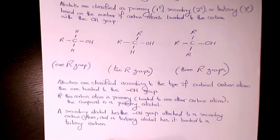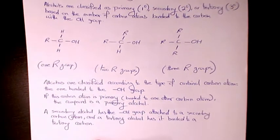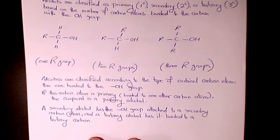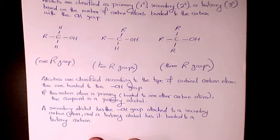Alcohols are classified according to the type of carbon atom bonded to the hydroxyl group. If this carbon atom is primary — meaning bonded to one other carbon atom — the compound is a primary alcohol. The secondary alcohol has a hydroxyl group attached to a secondary carbon, which is connected to two other carbons, and a tertiary alcohol has a hydroxyl group bonded to a tertiary carbon.